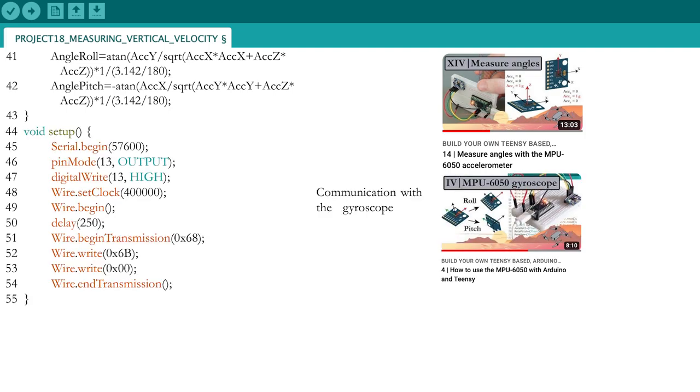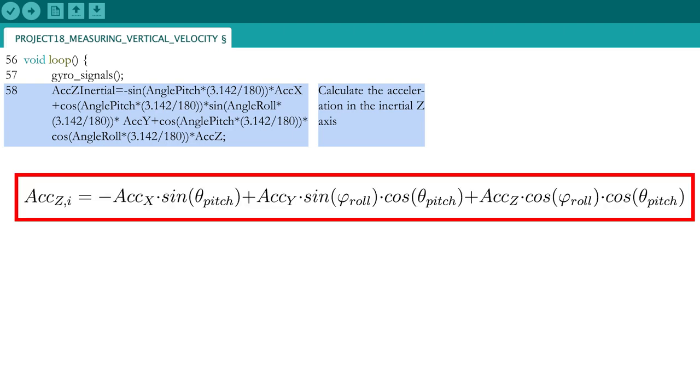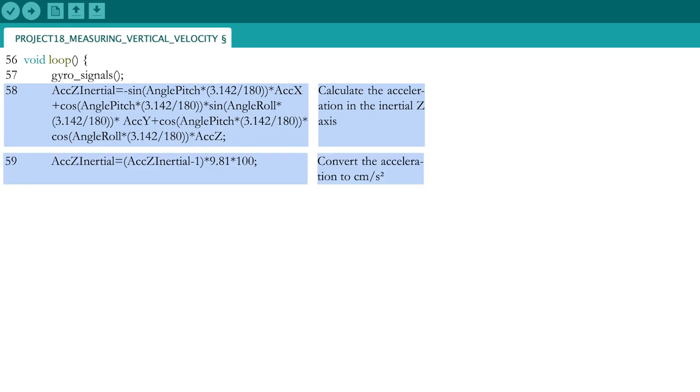In the setup part, you will start the communication with the MPU6050. Once the communication with the MPU6050 is done, you will call the function in the loop part and calculate the acceleration in the inertial Z axis from the accelerometer values and the roll and pitch angles using the equations that we derived earlier in this part. Remember that the unit of acceleration is G, so in order to convert it to centimeter per square second, you need to subtract the result with 1 and multiply it with 9.81.